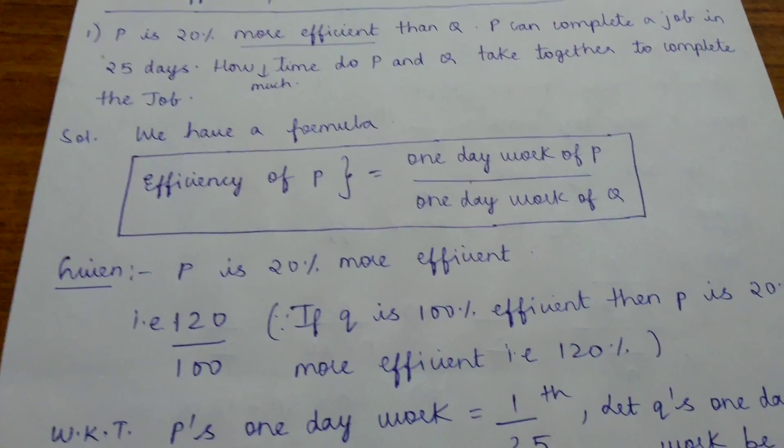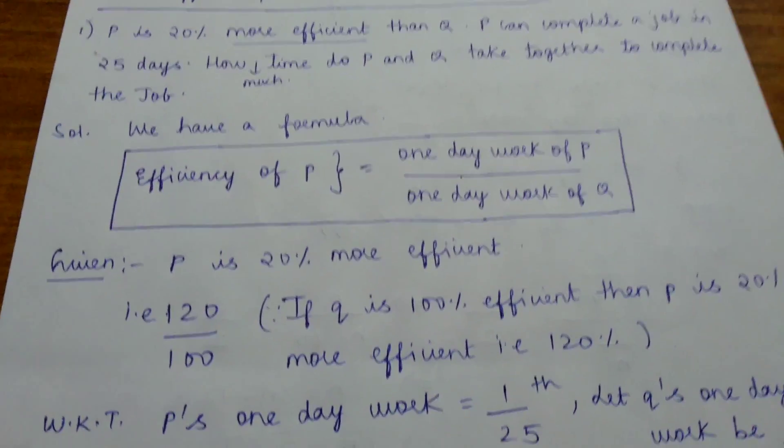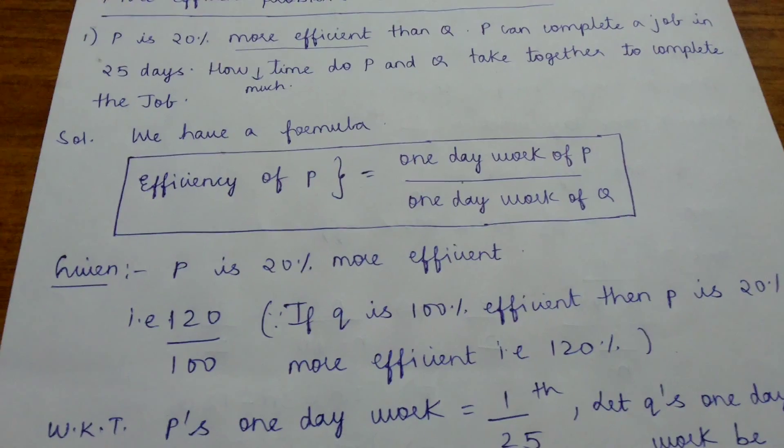So we write 120 by 100, because if Q is 100% efficient, then P is 20% more, that is 120.